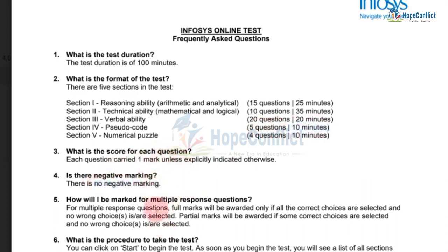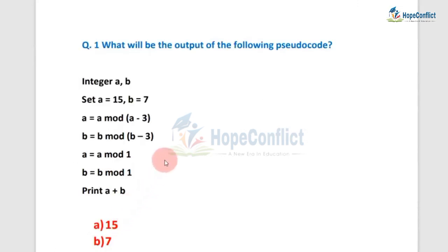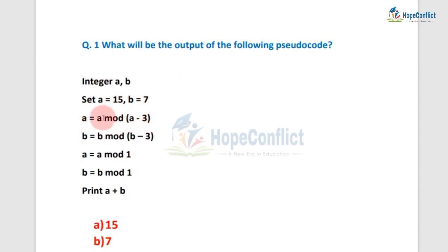Let's get started with Question 1. The question asks: what will be the output of the following pseudo code? Value of a equals 15, value of b equals 7. Now a equals a mod (a minus 3). What is the meaning of 'mod'? For example, if we write a mod b, what is the meaning of a mod b?